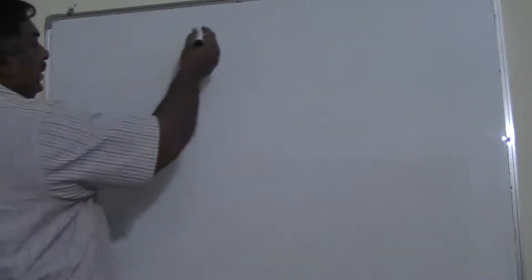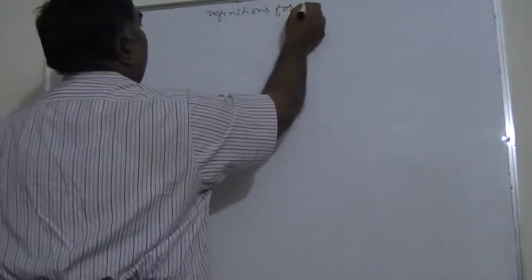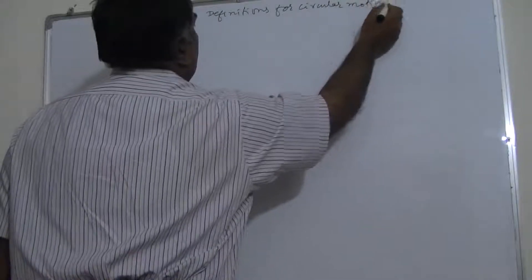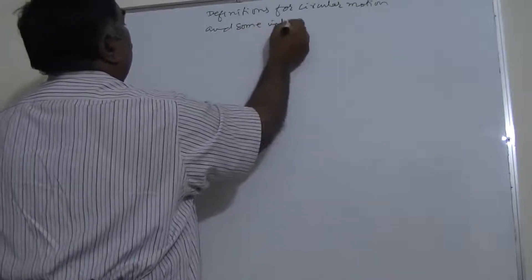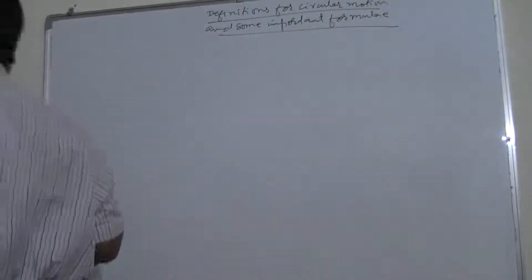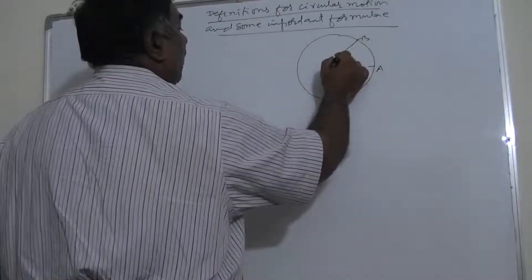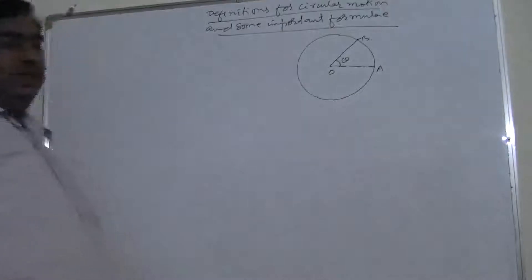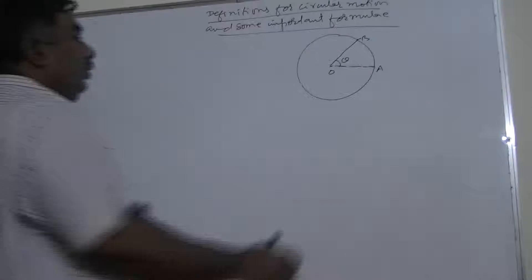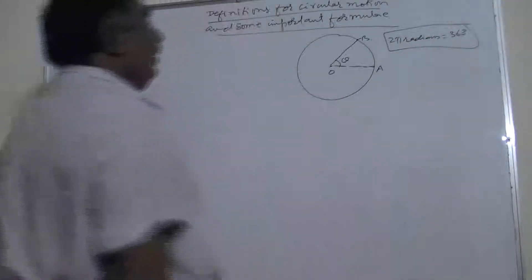We will discuss some definitions and important formulas for circular motion. In the previous lecture, I gave the definition of angular displacement and its SI unit. Angular displacement is the angle made when a body moves along a circle — if a body starts from A and reaches B, that angle theta is the angular displacement. Its SI unit is radian, and 2π radians equals 360 degrees.